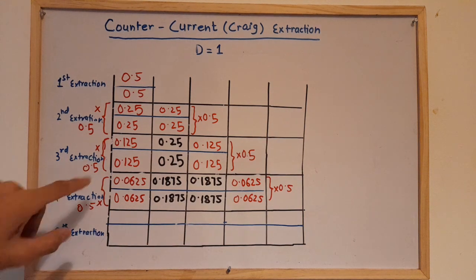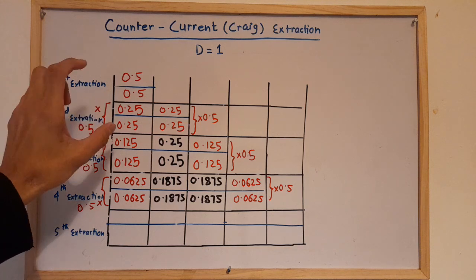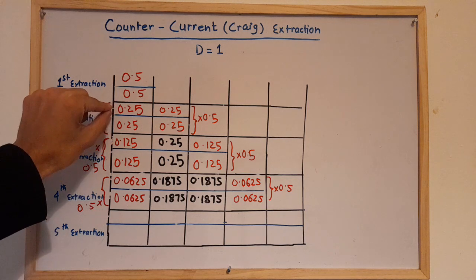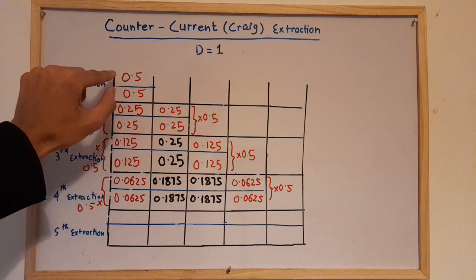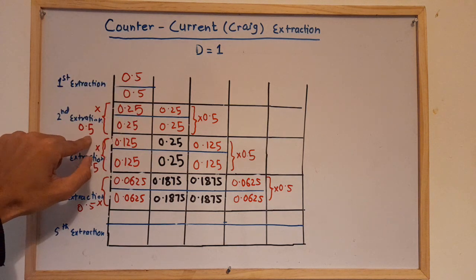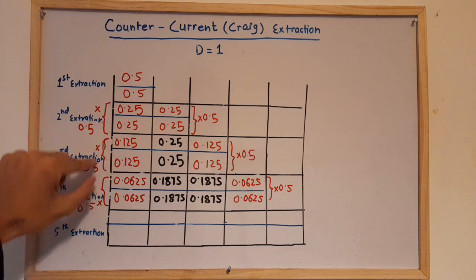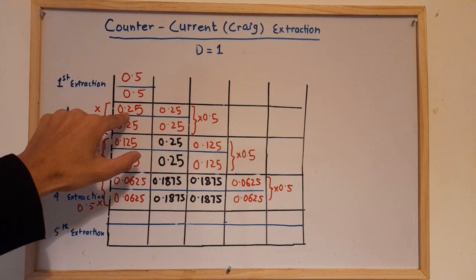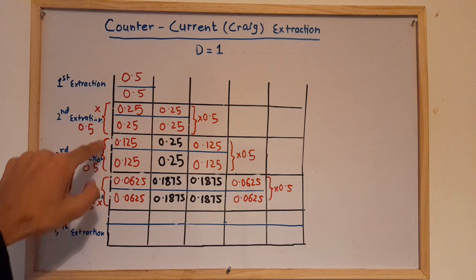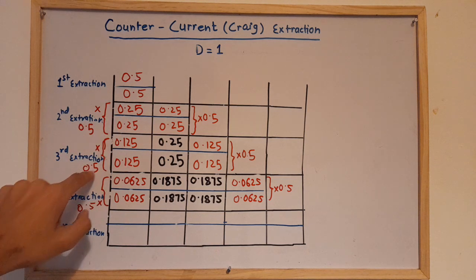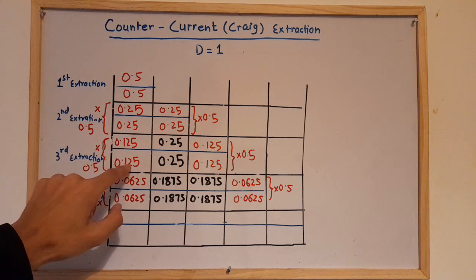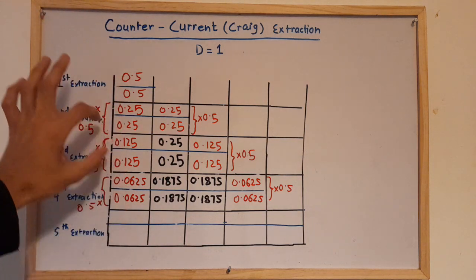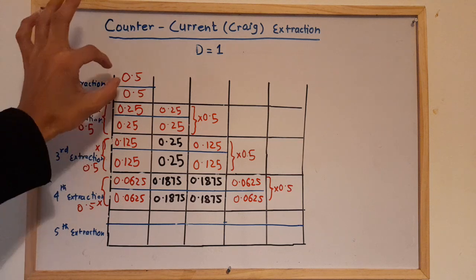We have five extractions to follow. There is a trick we need to follow to get all these values. For the second extraction, to get the value on the left-hand side — how we get 0.25 — you just multiply 0.5 with 0.5 to get 0.25. For the third extraction, multiply 0.25 with 0.5, that becomes 0.125. Then 0.125 multiplied by 0.5 becomes 0.0625. On the left-hand side, just multiply 0.5 with the first value.